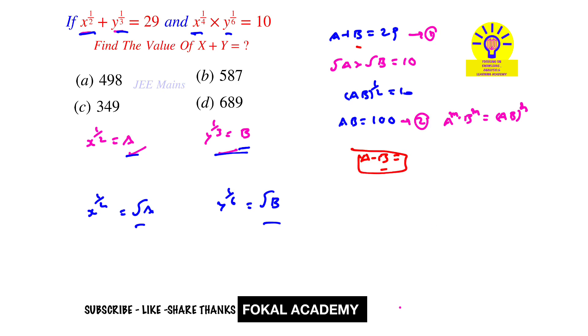We know that a minus b whole square equals a plus b whole square minus 4ab. Now substitute here: a minus b whole square equals a plus b, which is 29 squared, minus 4 times ab, which is 100.